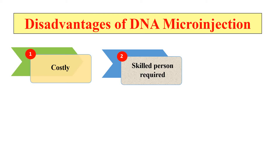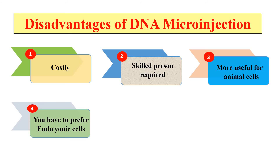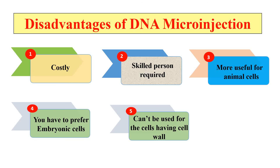If you want to use microinjection as a method of choice, it is generally more useful for animal cells. If you want to use it for plant cells, then it cannot be used efficiently because plant cells have a cell wall, so microinjection doesn't work properly. Embryonic cells are generally preferred for manipulation because, as compared to adult cells, you have to prefer embryonic cells. This method is generally useful for protoplasts and not for cells that have a cell wall.